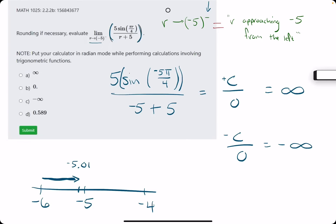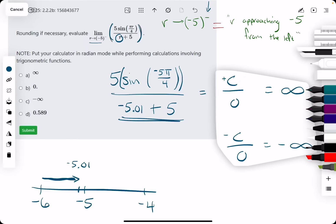We want to imagine plugging in this r value from the left of negative 5. When we plug this in, the idea is this will tell us whether we have a positive 0 or a negative 0. If we add these two values, it'll be very close to 0 but still negative. We'll work out this situation.